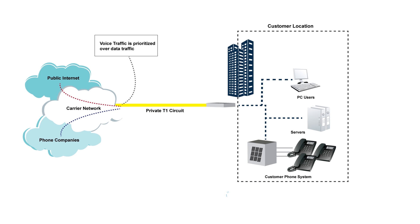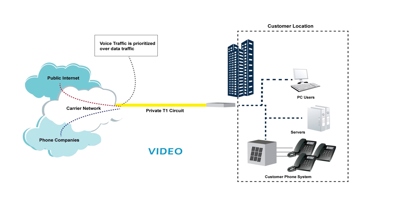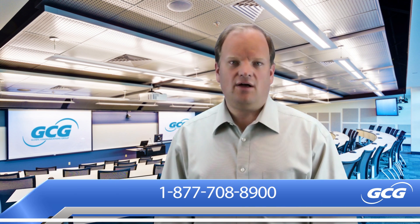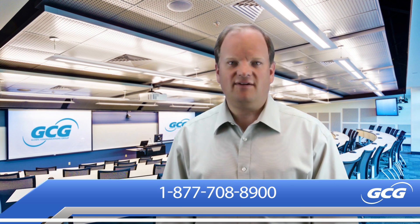The advantage is a PRI will provide increased flexibility with the option to assign channels for specific purposes, such as voice, data, or even video. Most PRI circuits also come with SLAs — service level agreements — that ensure service uptime and call quality. We hope that you've enjoyed this overview of ISDN PRI service. If you have additional questions, please don't hesitate to call us at Global Communications Group at the number below. Thank you.